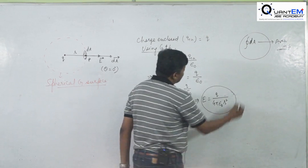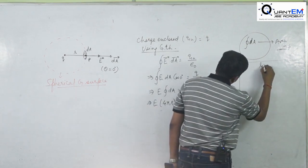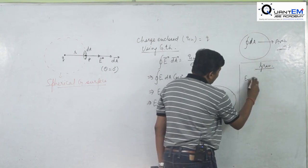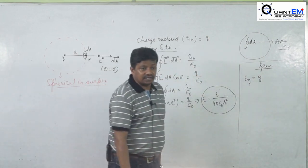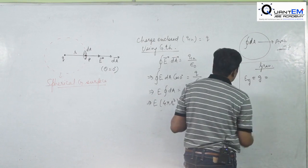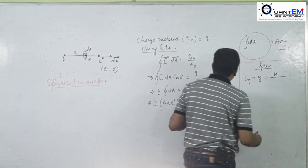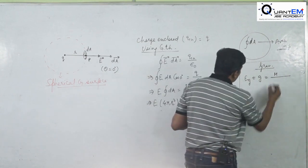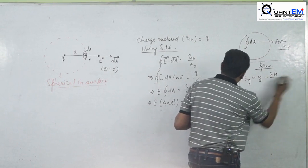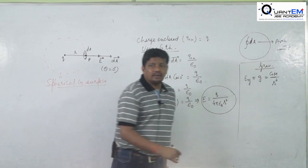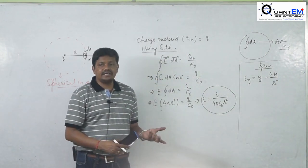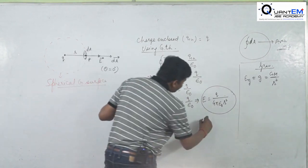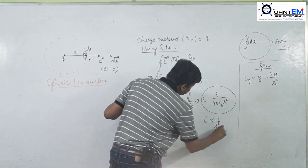This is the result for a point charge. For the gravitational analogy: replace E with g (acceleration due to gravity), Q with mass m, and 1/(4π·epsilon-naught) with G, giving g = Gm/r². The electric field intensity is inversely proportional to r². The E-vs-r graph shows a hyperbolic decay on both sides of the charge.